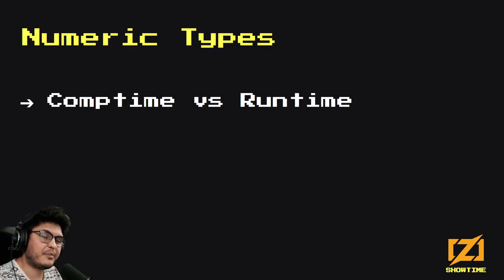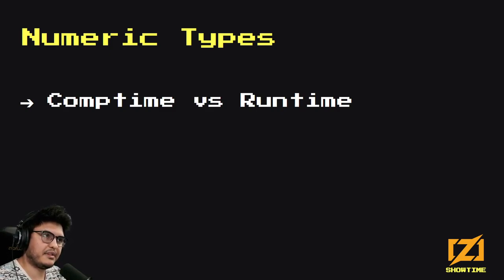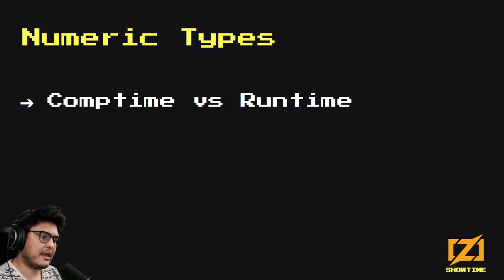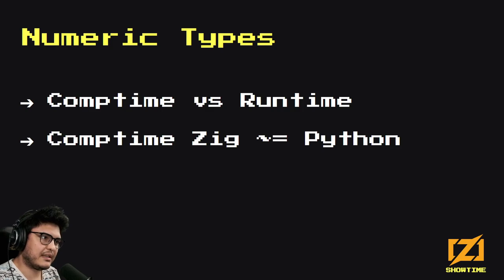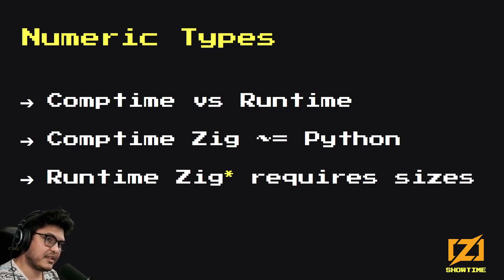To be precise, there's a big difference between comptime and runtime. The error isn't saying "what are you doing, this is completely wrong" — it's thinking I'm trying to do something at comptime, while in fact that was supposed to happen at runtime. At comptime, Zig is kind of like Python: you create a variable and it can hold any arbitrarily large number without caring about the size. But in runtime Zig — with a caveat we'll get to — you have to specify sizes.